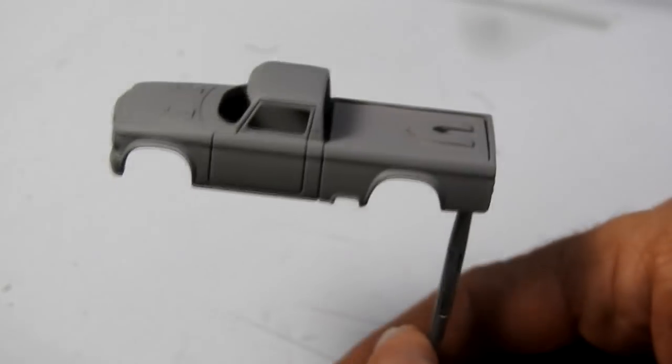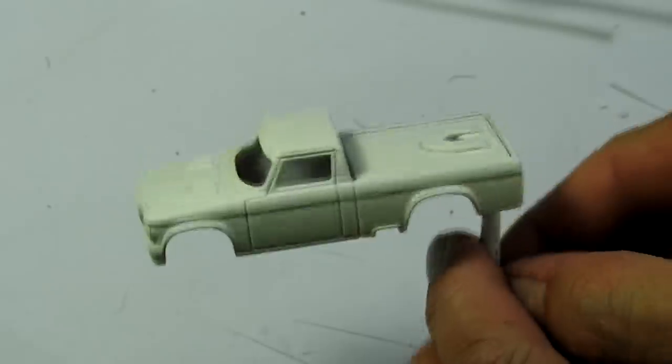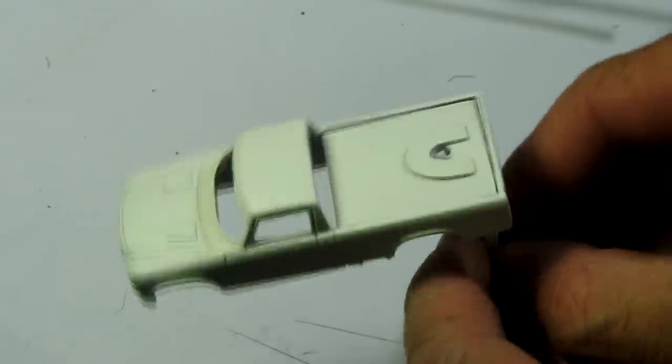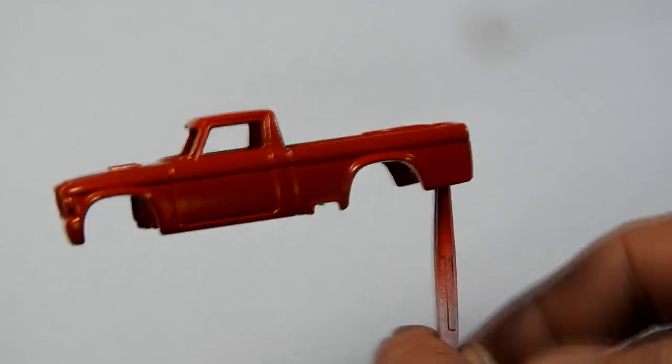Now I can move on to some paint, start out with some grey primer over the body of the truck, followed by some white, and then I painted the whole thing in a nice bright red.